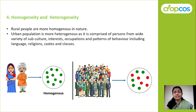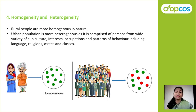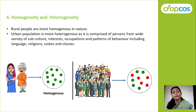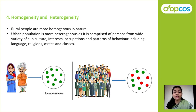Whereas urban population is heterogeneous in nature, because there is a variety of cultures. People have different interests and carry out different operations. Their pattern of behavior, language, religion, and population composition are all different. That is why we get so many differences in the urban area. People living in rural areas are homogeneous while urban population is heterogeneous.